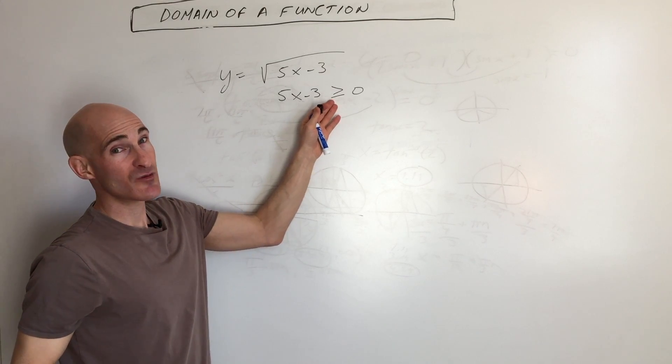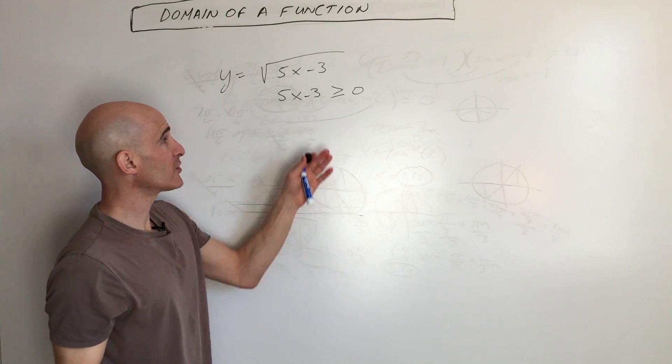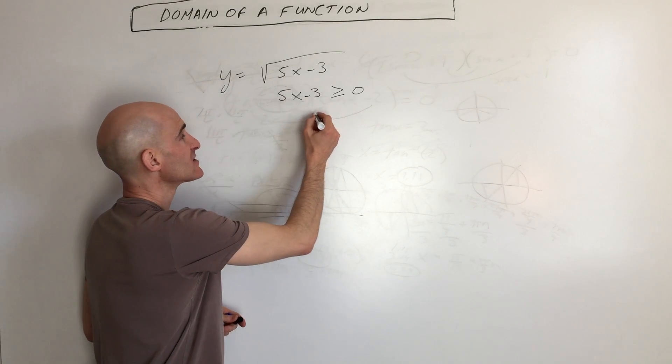We don't want it to be less than zero, that would be negative. We can't take the square root of a negative without getting imaginary numbers. So if we're looking at the domain here, we can solve this and say,